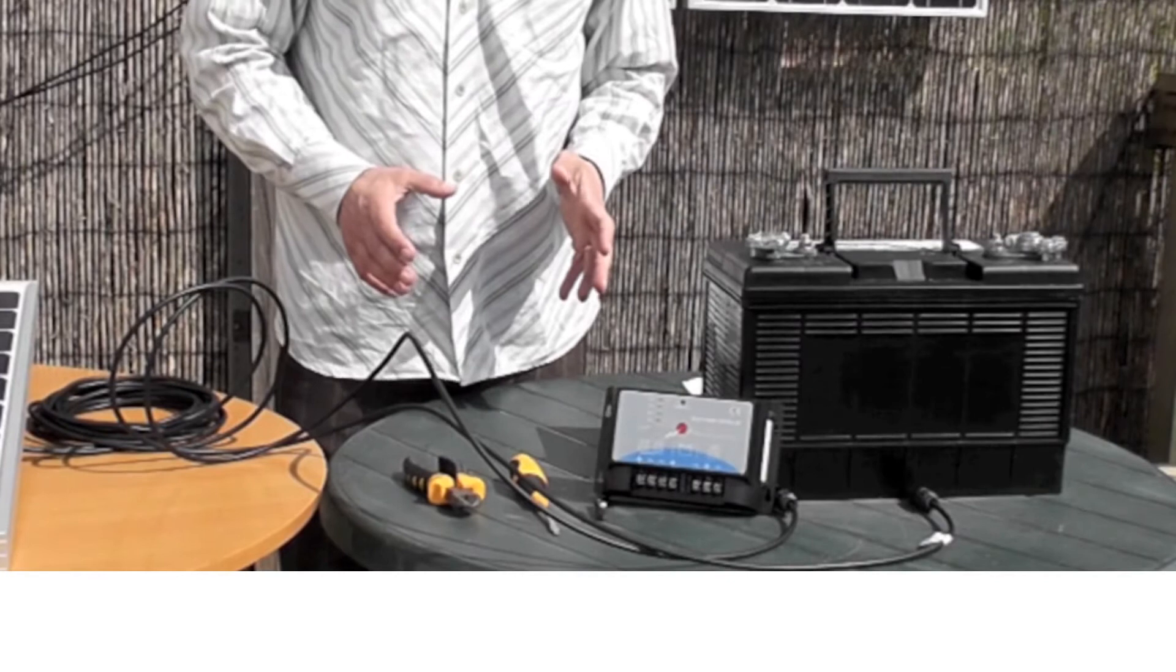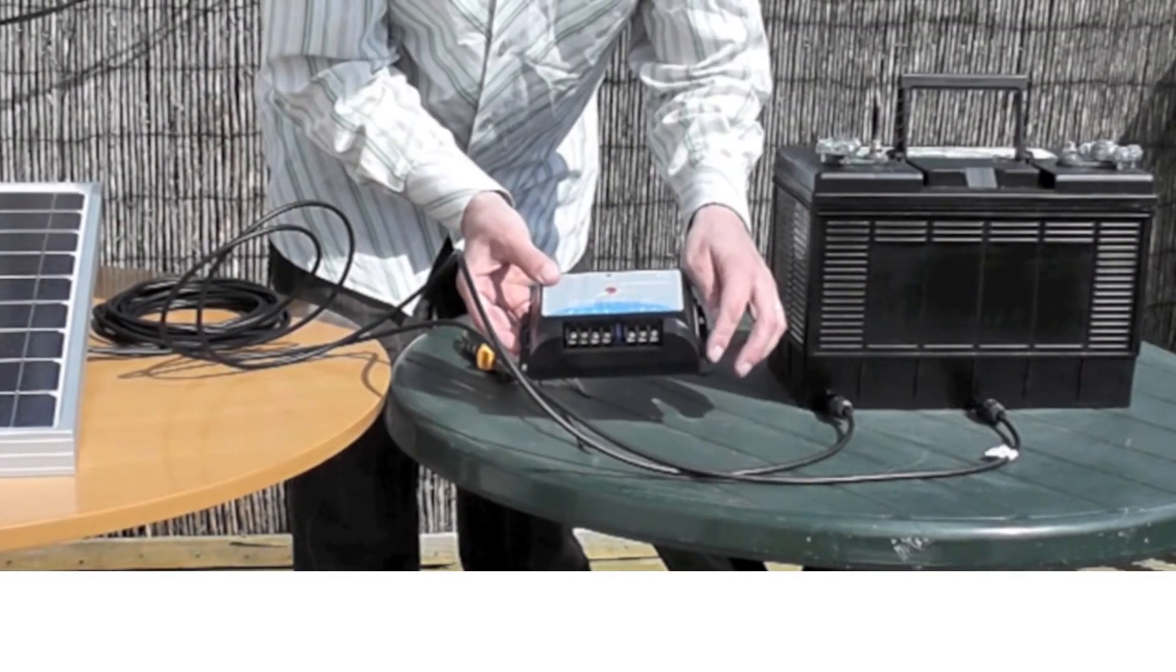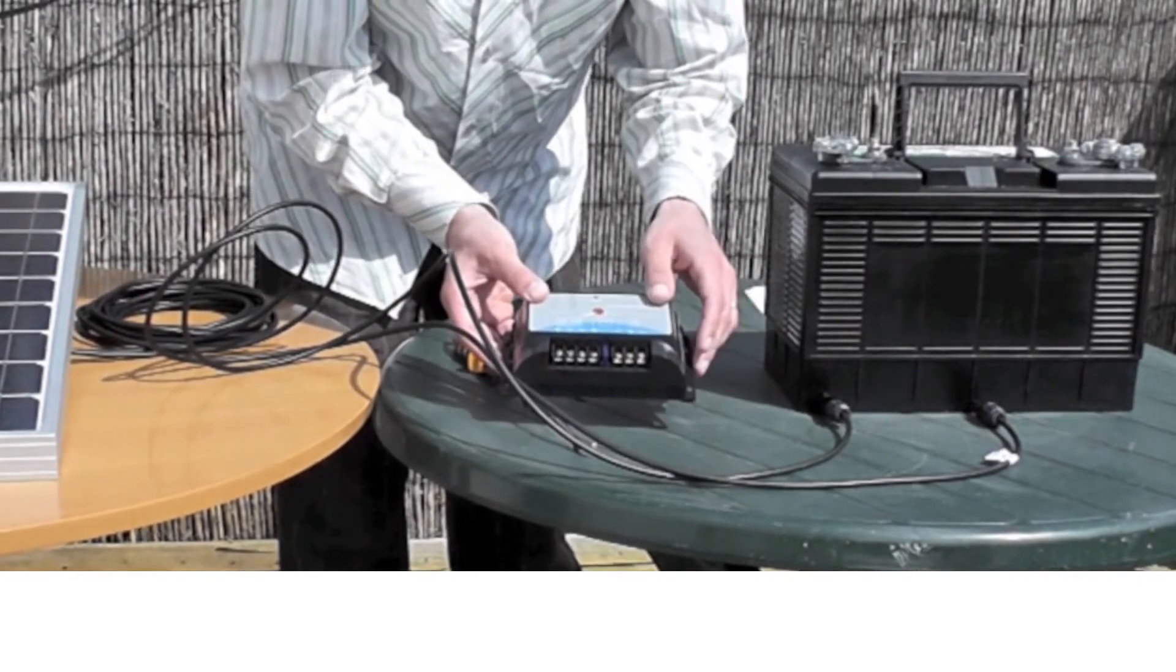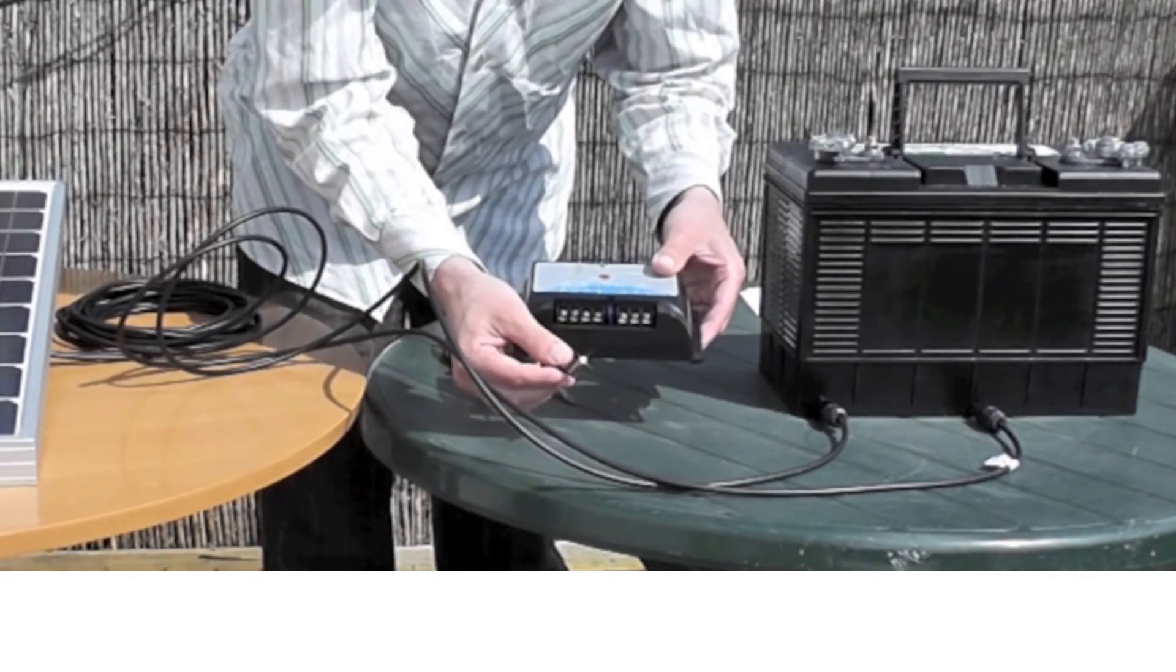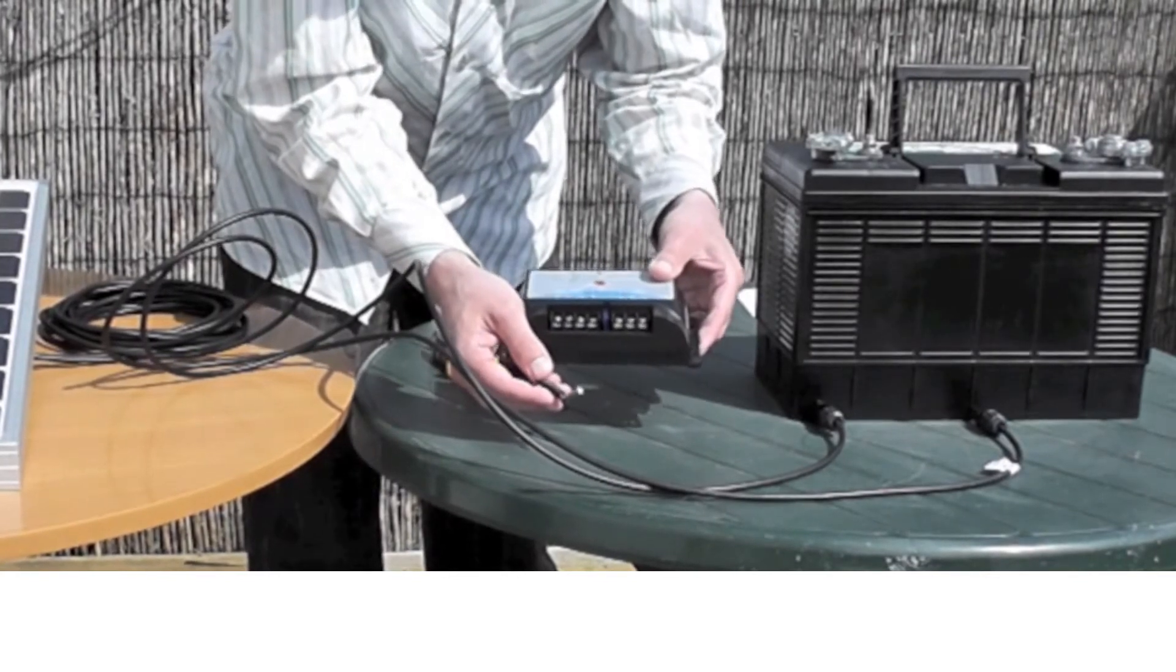Then you have to decide where to put your charge controller. You can mount this charge controller very easily by putting screws through here. The most important thing is that it's within about a metre of your battery, and that it's somewhere which is about the same temperature as your battery. This is the temperature sensor here, and that tests what temperature the battery is at, and charges it accordingly.